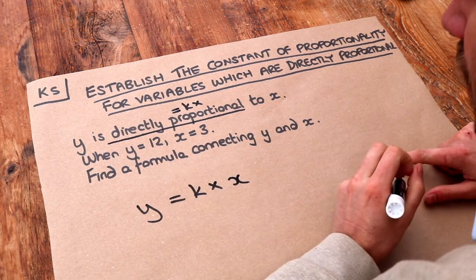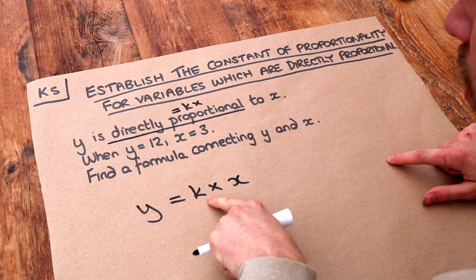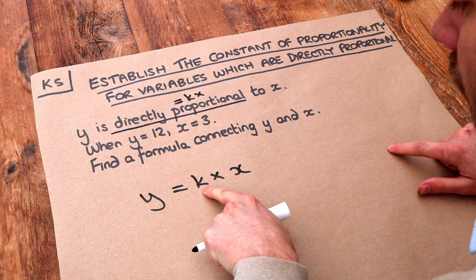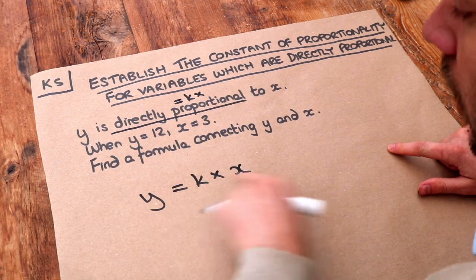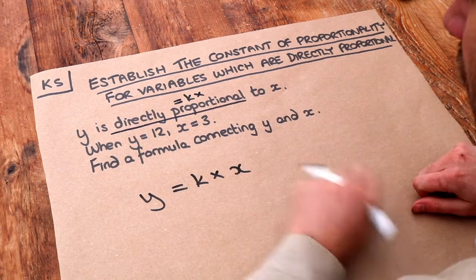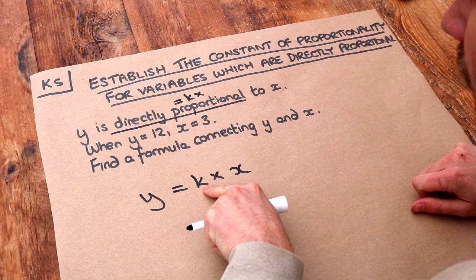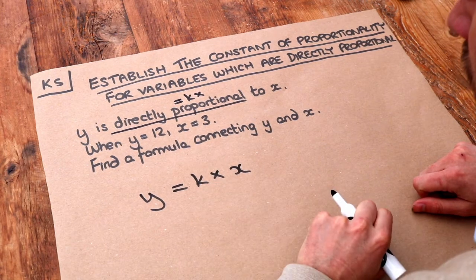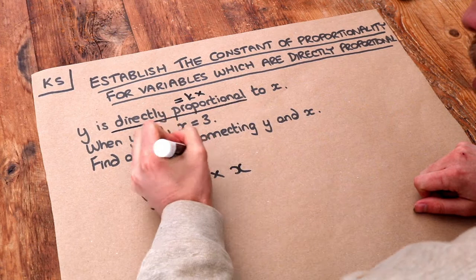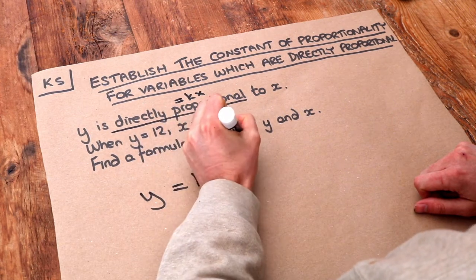Now at the moment we don't know what that k is. X and y are variables which we can set to different values, like here for example. But k is some fixed number that we need to work out, and this k is known as the constant of proportionality.